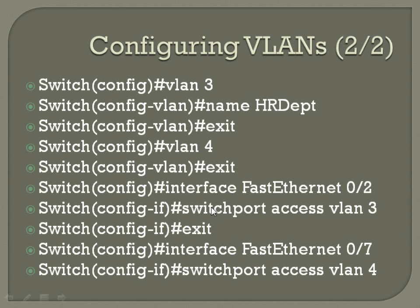For FastEthernet0/2, we know we've got that going to a PC in the HR department. So interface FastEthernet0/2 jumps into interface configuration mode, and then the command is 'switchport access' and then whatever VLAN you're attached to — VLAN and then the number, in this case 3.